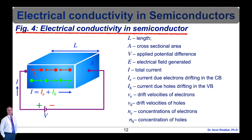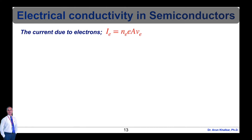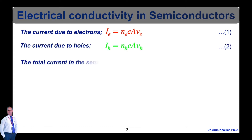The electric field exists along the x direction. The field accelerates conduction electrons along the negative x direction and holes along the positive x direction. The carriers start moving with a constant velocity called the drift velocity. The current due to electrons, equation number 1, is I subscript e equal to n subscript e times e times A times v subscript e. The current due to holes, equation number 2, is I subscript h equal to n subscript h times e times A times v subscript h.